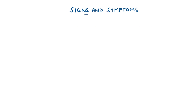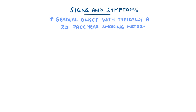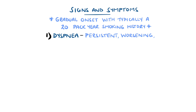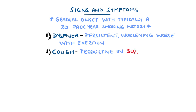The symptoms of COPD are usually gradual in onset, and typically appear in those with over a 20-pack year history of smoking. Dyspnoea, meaning shortness of breath, is the most common finding, that is typically persistent and worsening — initially getting worse with exercise, but as the disease progresses, it may even be present at rest. A cough is also common, which may be productive or non-productive, although 30% of patients do present with a chronic productive cough. In this instance, sputum characteristics like colour and volume can be useful markers for exacerbations.